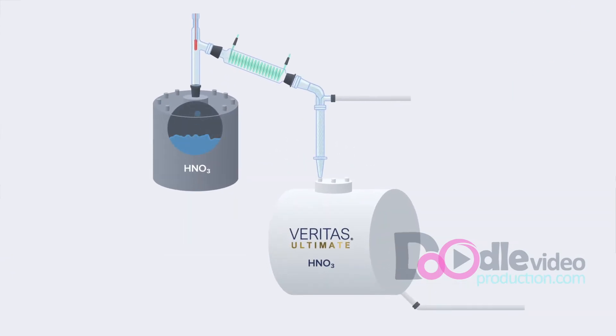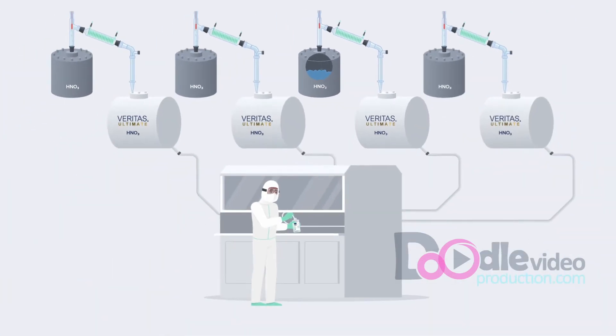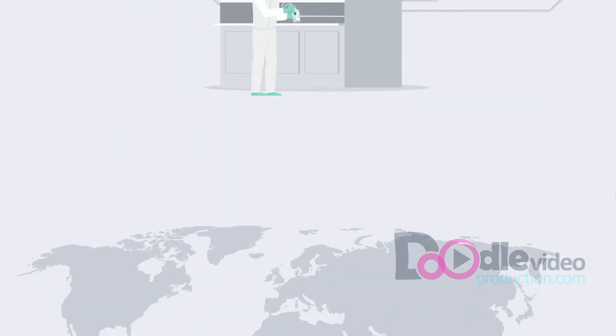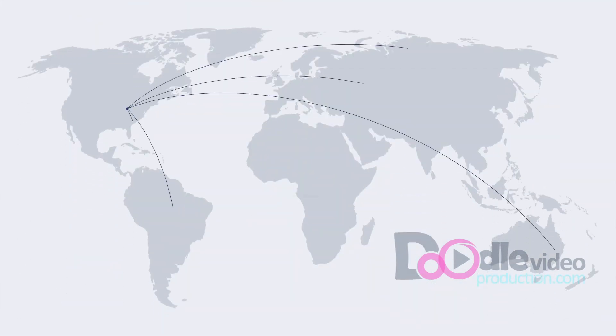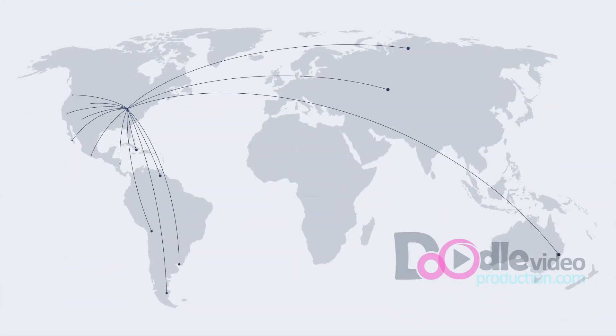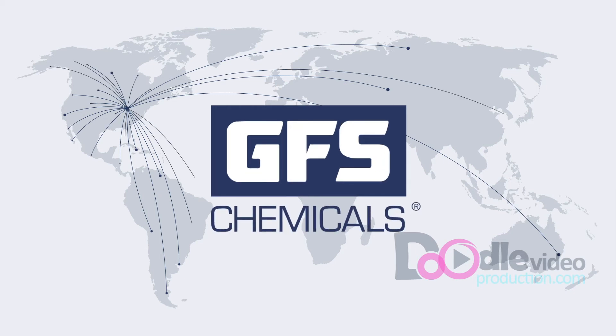Manufactured, bottled, and packaged in an ISO 5 Class 100 clean room environment in Columbus, Ohio, GFS Chemicals offers a direct-to-consumer supply chain for some of the highest purity acids in the world, creating several advantages to customers including: